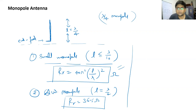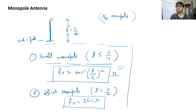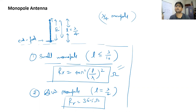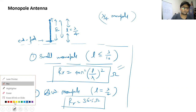Monopoles are always placed vertically from the ground. Since the monopole is placed vertically, the voltage difference causes the electric field to be directed in the vertical direction, fluctuating from tip to tip. Therefore the electromagnetic waves radiated from a monopole antenna will be vertically polarized, which is a kind of linear polarization.